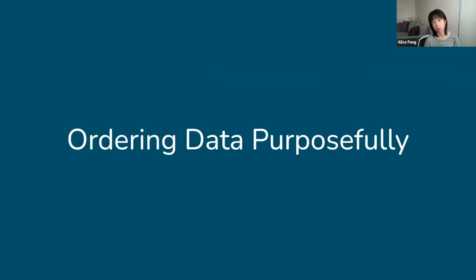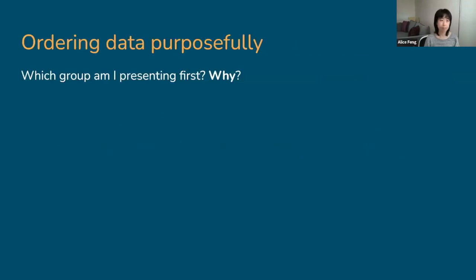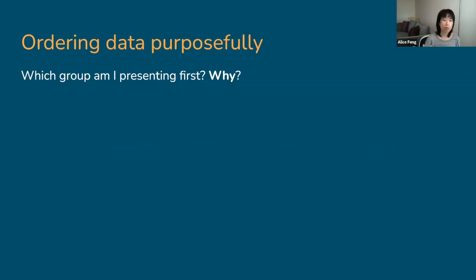Now let's talk about ordering data purposefully — things like the order of bars in a bar chart or rows in a table. The main question is: which group am I presenting first, and why? Who we present first affects how readers perceive the relationship or hierarchy between groups. Always starting with white people or with men makes it seem like these groups are the default against which other groups should be compared and that they are the most important populations. Who we show first can also reflect who we view as the main audience. There is a historical precedent for why white people or men often appear first in charts.